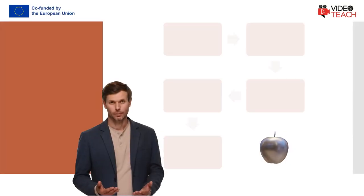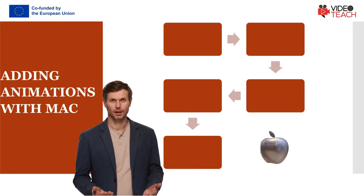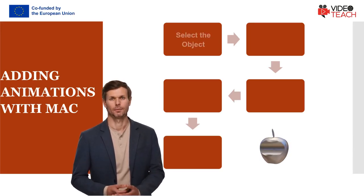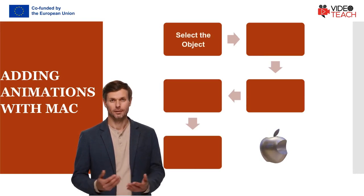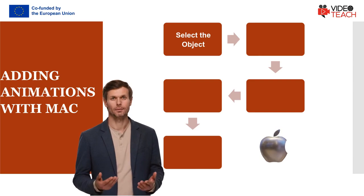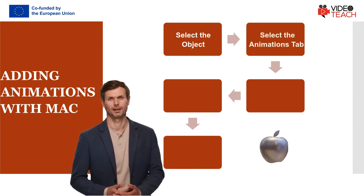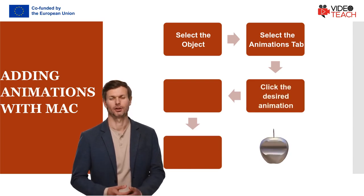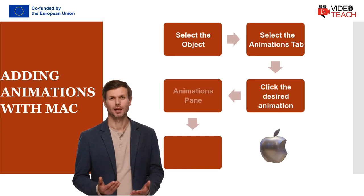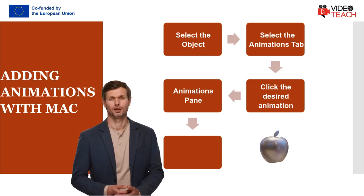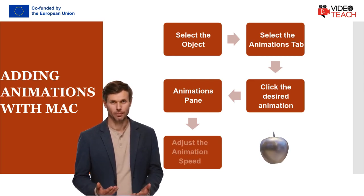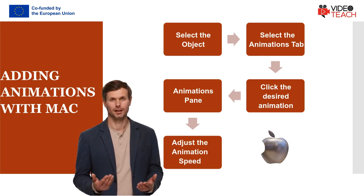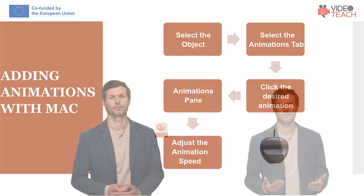Click OK to save your changes and press Ctrl+S to save the project. If you own a MacBook or iMac, these steps will help you add animations in PowerPoint: first, open the presentation and select the object on which you want to apply the animation. Then select the Animations tab and tap the drop-down menu to explore all the available animations. Click the desired animation to apply it to the selected object. You'll see the Animation Pane button at the top menu bar — click on it, tap Effect Options, and adjust the animation speed and movement direction.